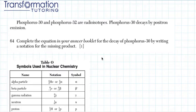In this question we are asked to complete the nuclear equation and to find the missing product. How do we do that?